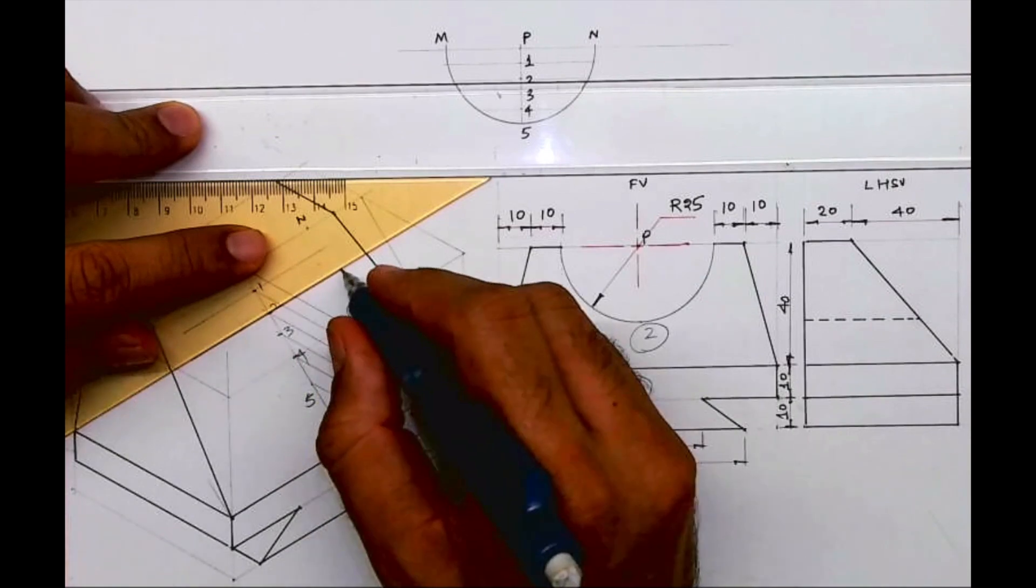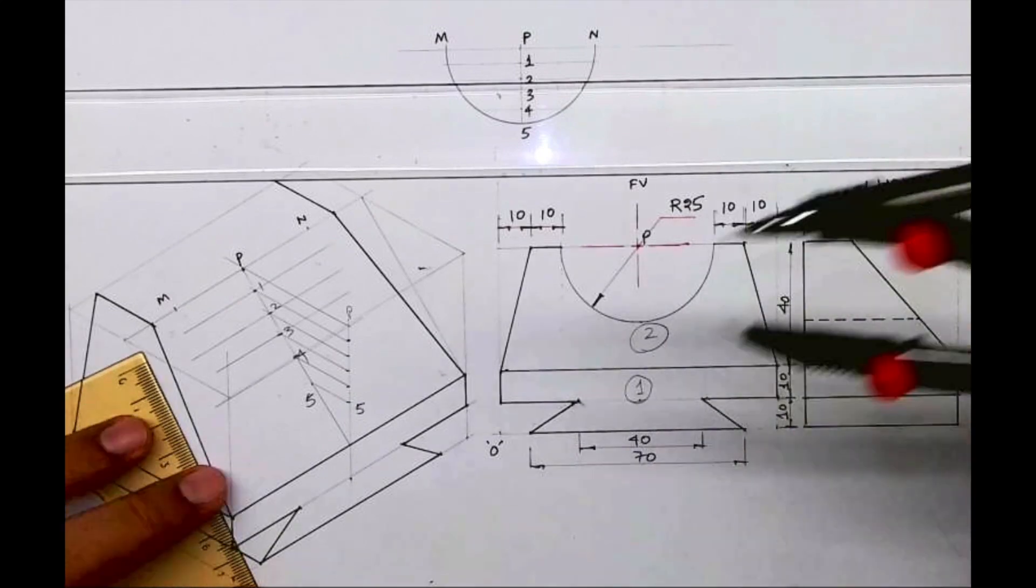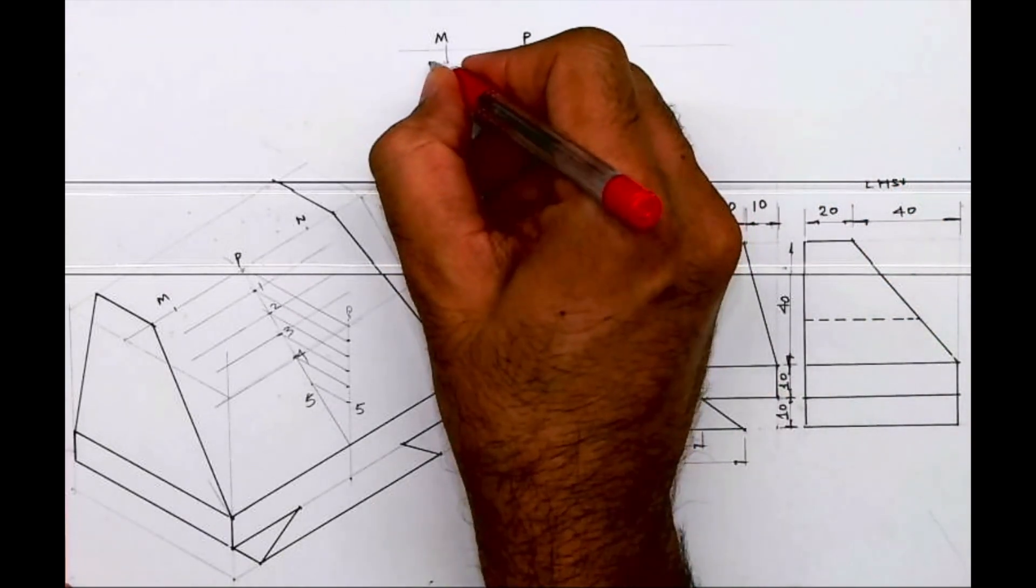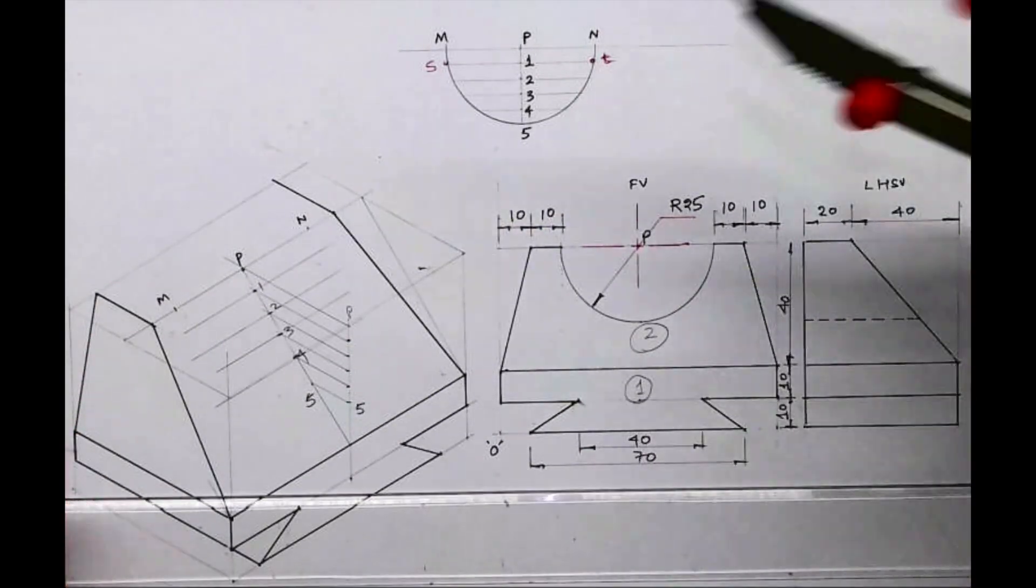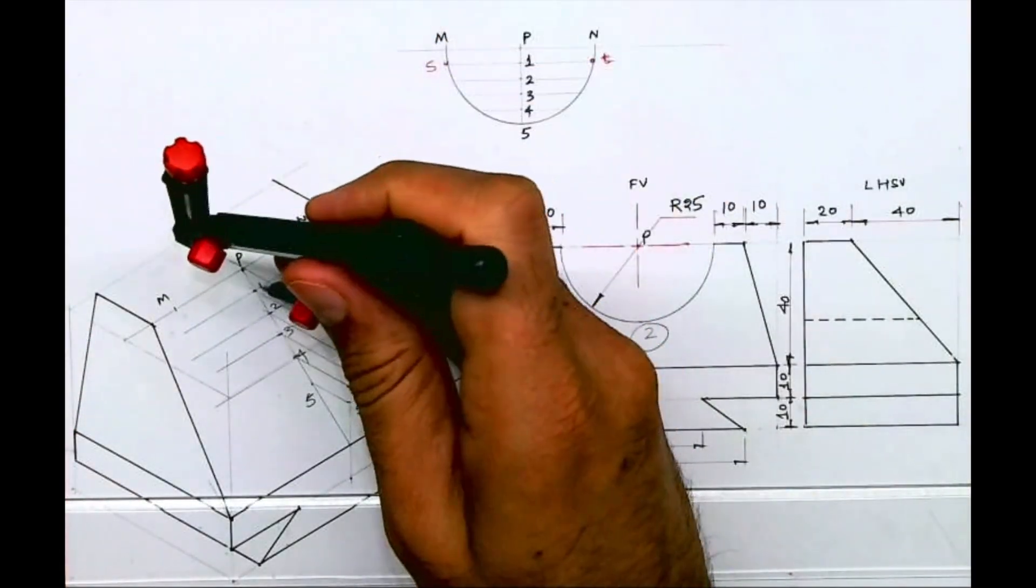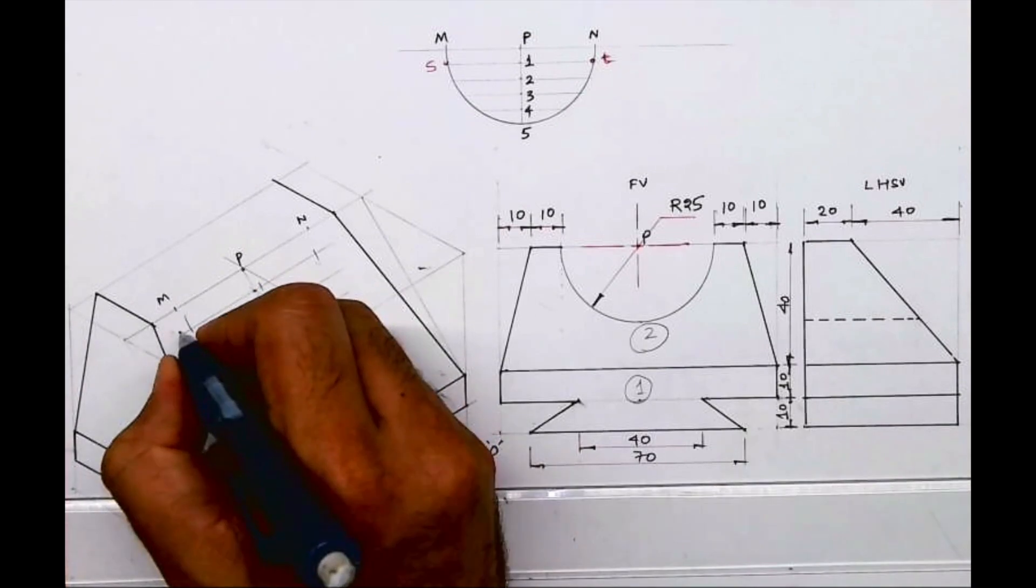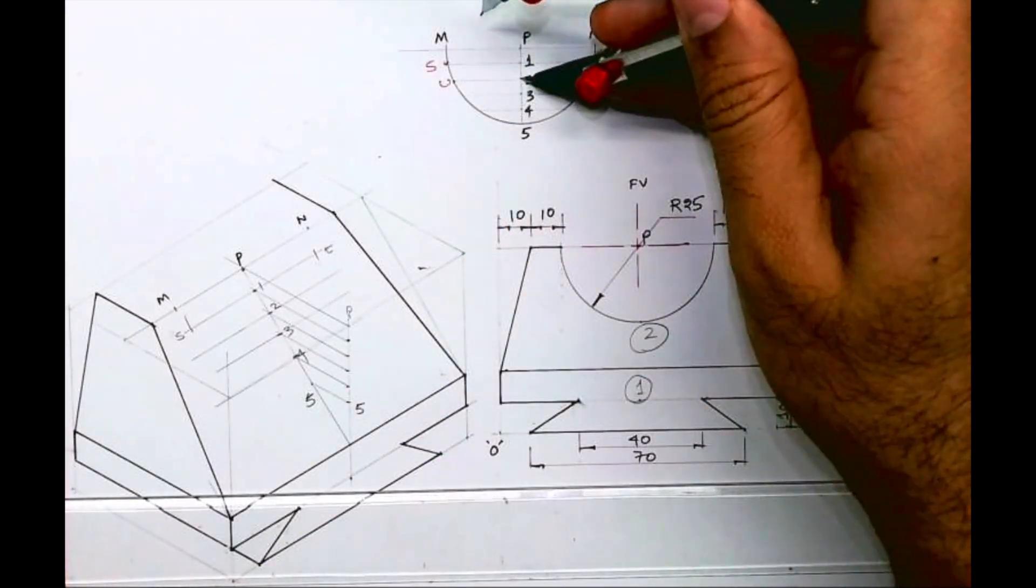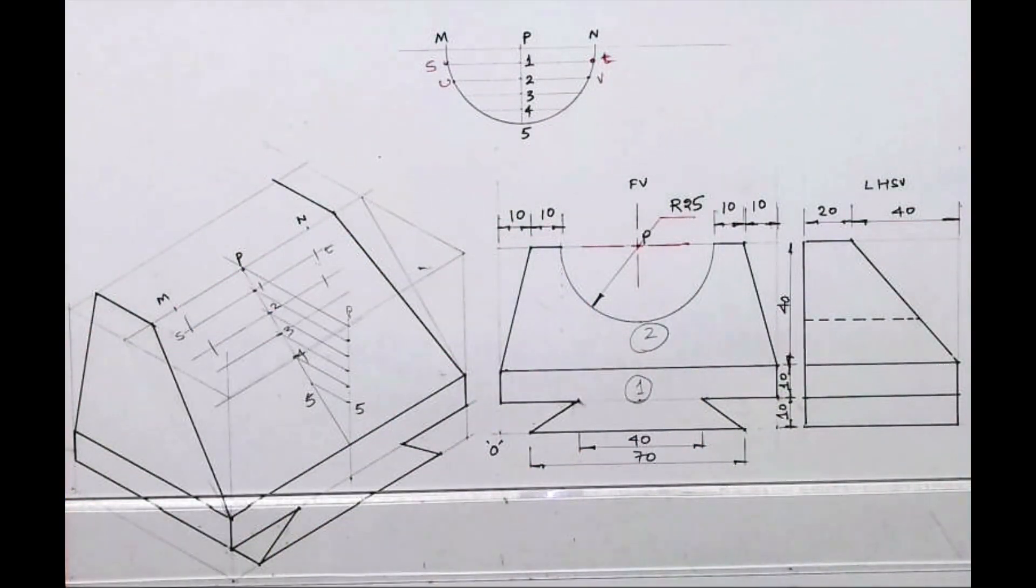Now what I need to do is transfer the coordinate distance, in the sense horizontal distance. I will write this as S and T. You can write whatever you want. From 1 to S and 1 to T you can cut. Same way I'll take another two points, let's say U and V. So 2 to U and 2 to V. This way you'll get U, V.